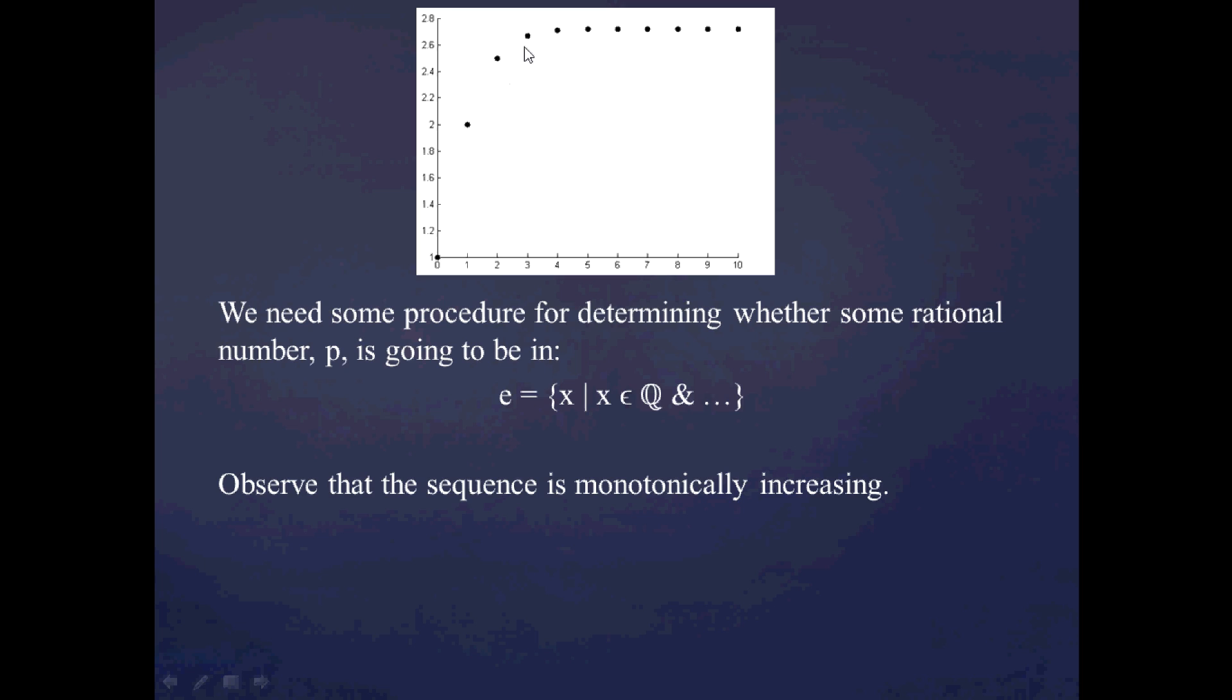So, as I said, this sequence of partial sums is monotonically increasing. So, what that means is that if I pick any one of these points, I know that the value that the series seems to be going toward is going to be above that example that I pick. So, if I were wondering whether that value should be placed in the cut, the answer would be yes, because there comes a point where the sequence exceeds that value.